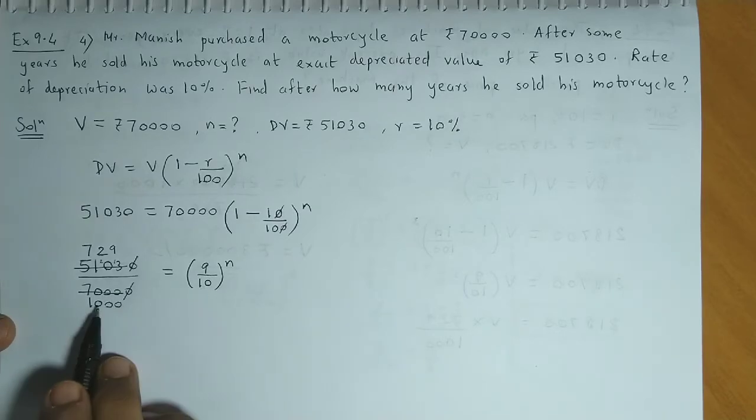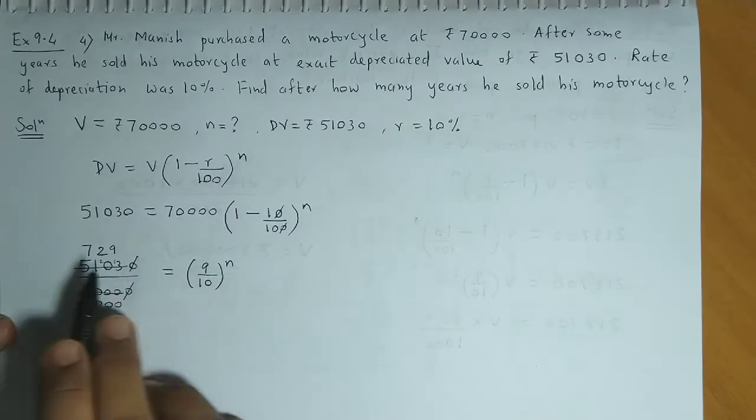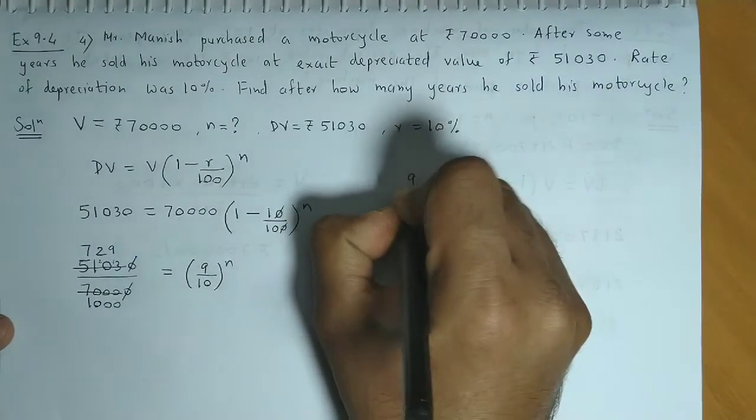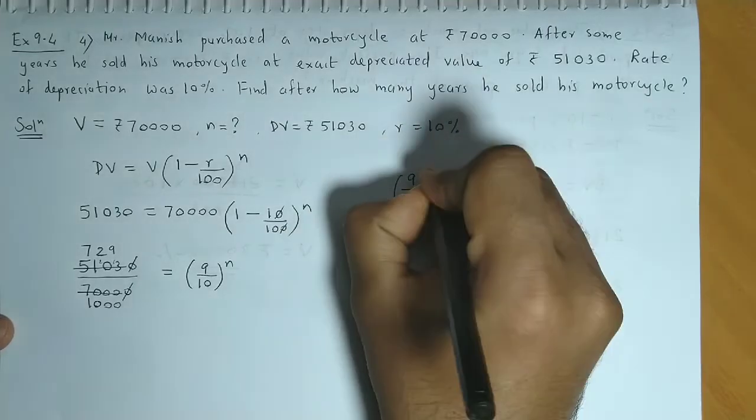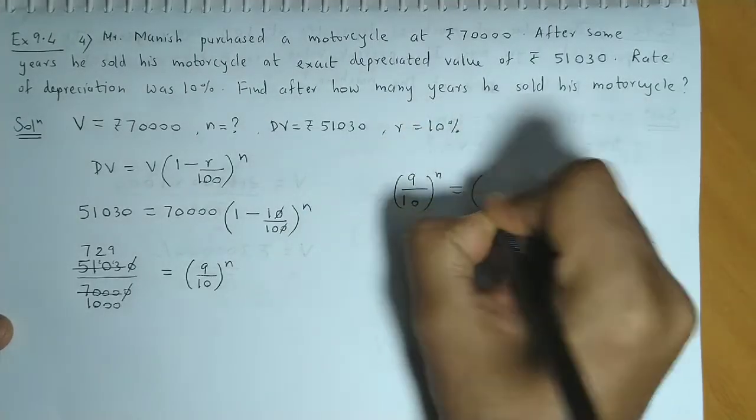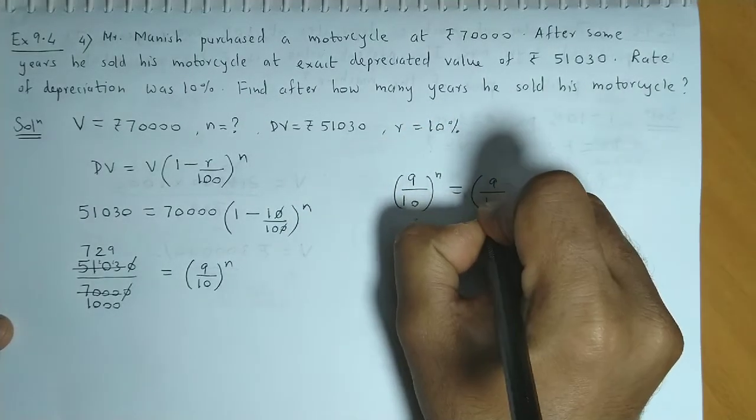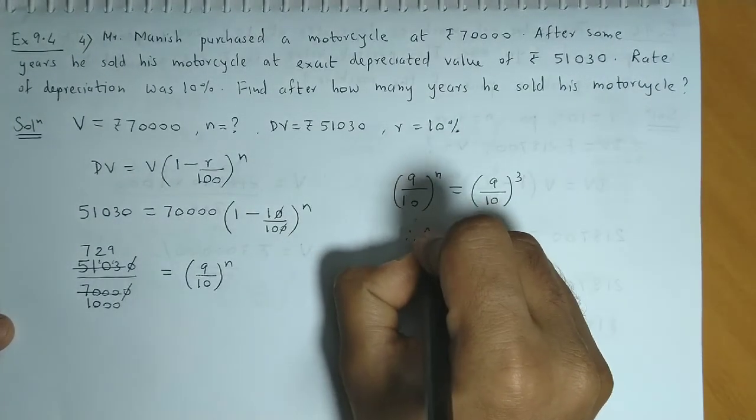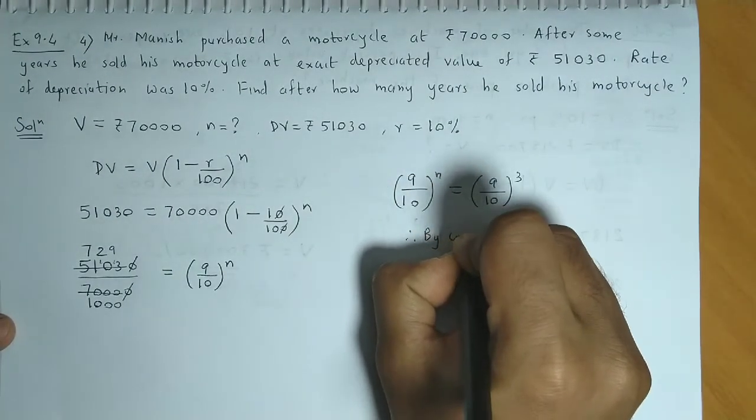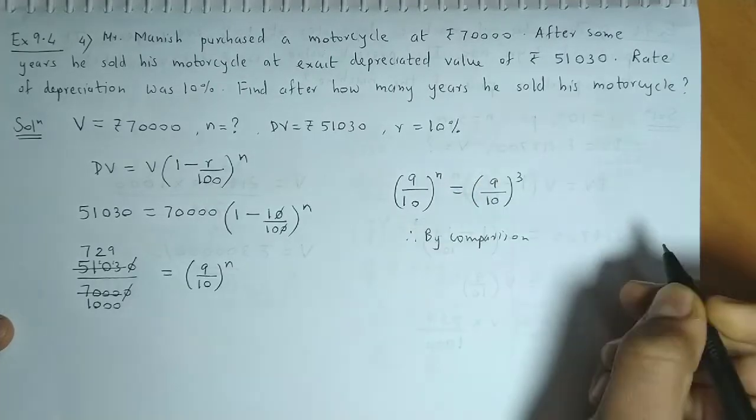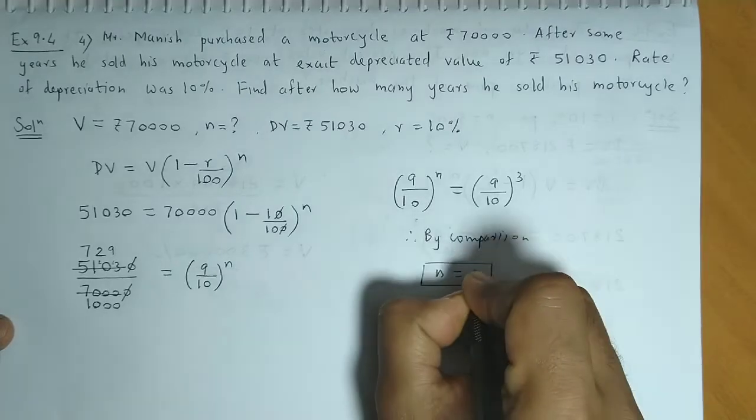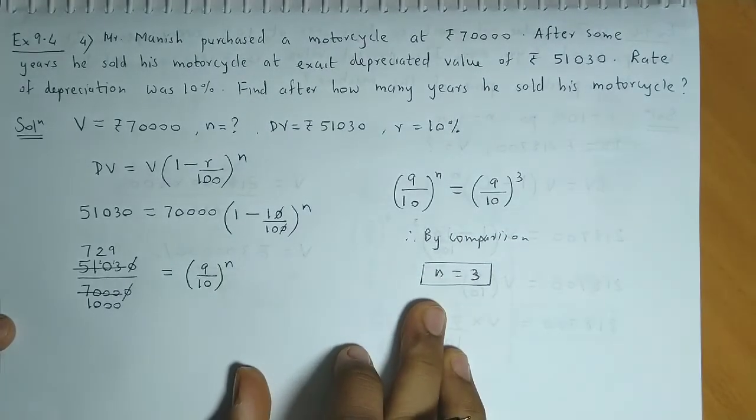So, if you observe, yaha 10 hai aur yeh 10 ka power hai. Yaha 9 hai aur yeh 9 ka power hume mila. This is 9 cube and 1,000 is 10 cube. So basically, hum keha sakte hai, 9 upon 10 raised to N is equal to 9 upon 10 the whole cube. So, therefore, agar hum compare kare hai both the sides. So, by comparison, N ki value aa jati hai, 3. So, the period is 3 years.